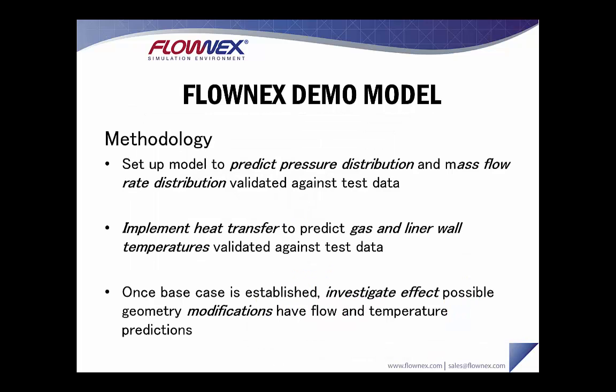The methodology for setting up a Flownex model is to first predict pressure distribution and mass flow rate distribution and validate that against test data. Then one would implement heat transfer to that cold flow model to predict gas and liner wall temperatures, and again validate those results against test or CFD data. Once the base case is established, the effects of possible geometry modifications can be investigated to see how they affect both flow and temperature.